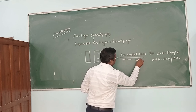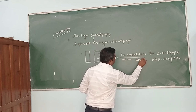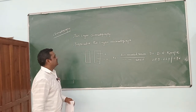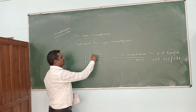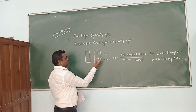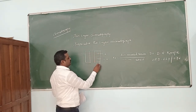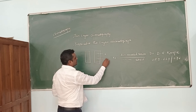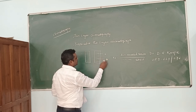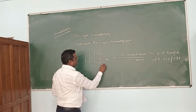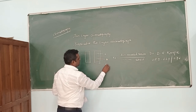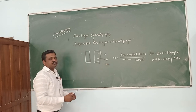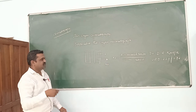The retardation factor can be determined. And if a difference in this retardation factor exists, the purity can be identified. If two components are there, it means it is a mixture — it is not a pure compound, it is not a pure sample.